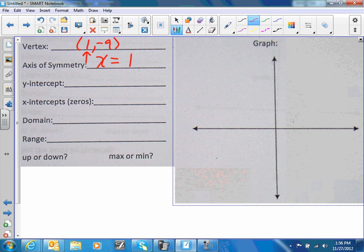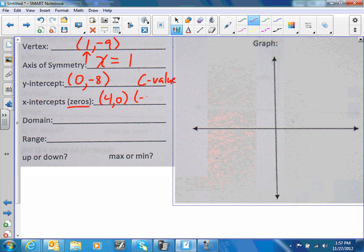In the equation, your y-intercept is your c value. In this case it was -8, so our y-intercept is at (0, -8). Your x-intercepts, which are your zeros, were at (4, 0) and at (-2, 0). We're going to leave the domain and range for now.